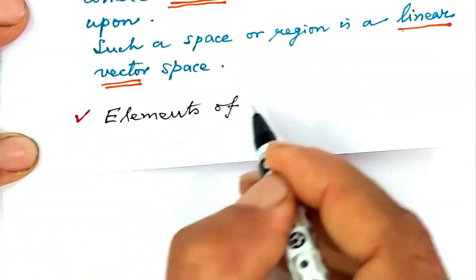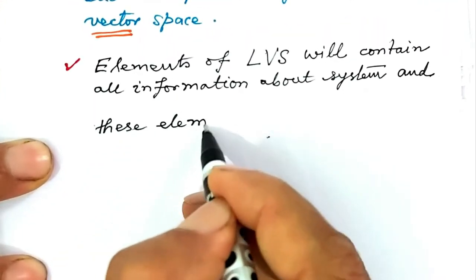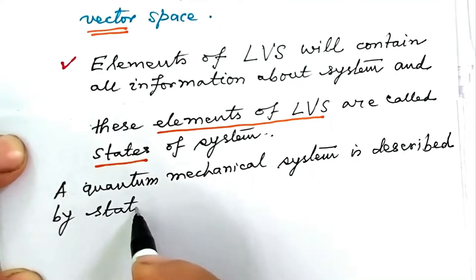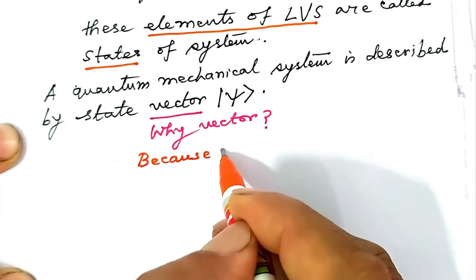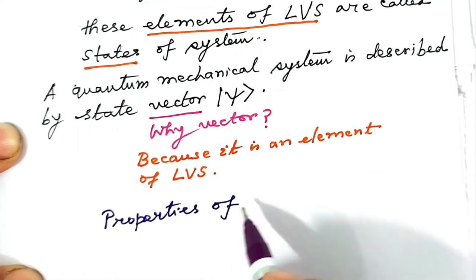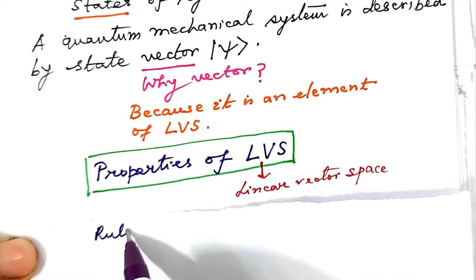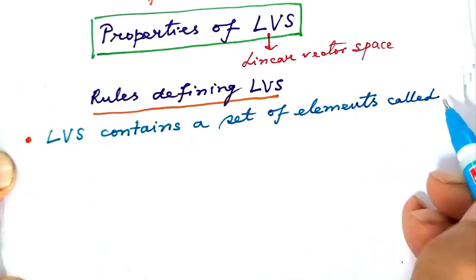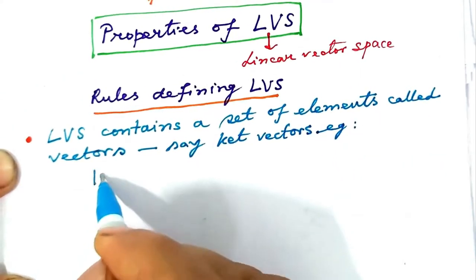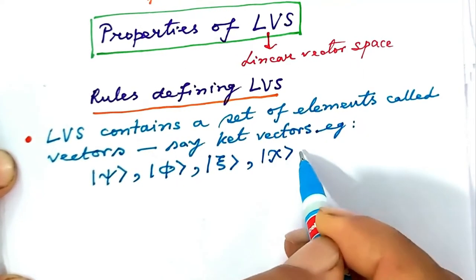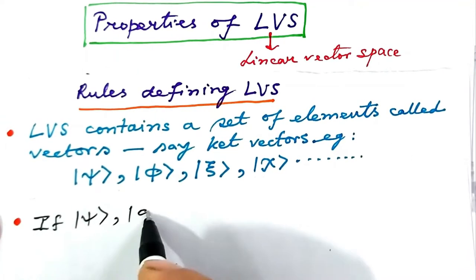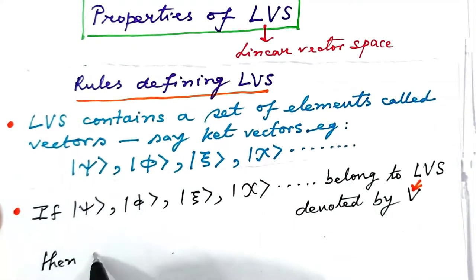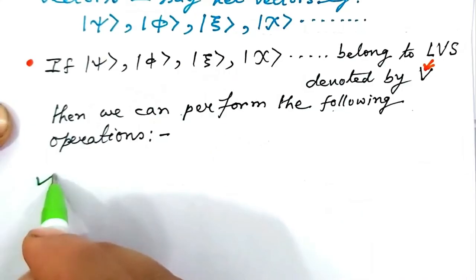Elements of a linear vector space contain all information about a system, and these elements are called states of the system. A quantum mechanical system is described by a state vector, ket-psi. It is a vector because it is an element of a linear vector space. Linear vector space contains a set of elements called vectors — for example, ket-psi, ket-phi, ket-xi, ket-chi. If these ket vectors belong to linear vector space V, we can perform specific operations on them.